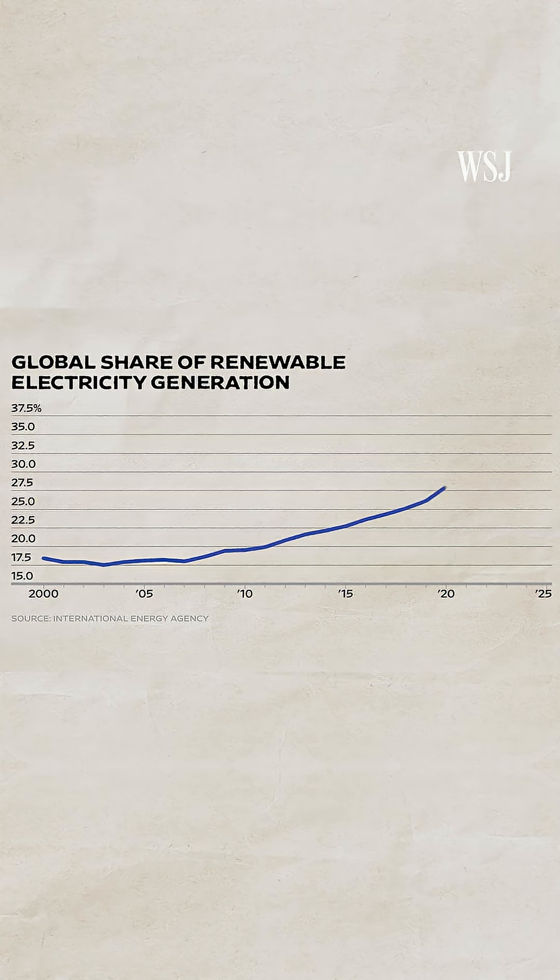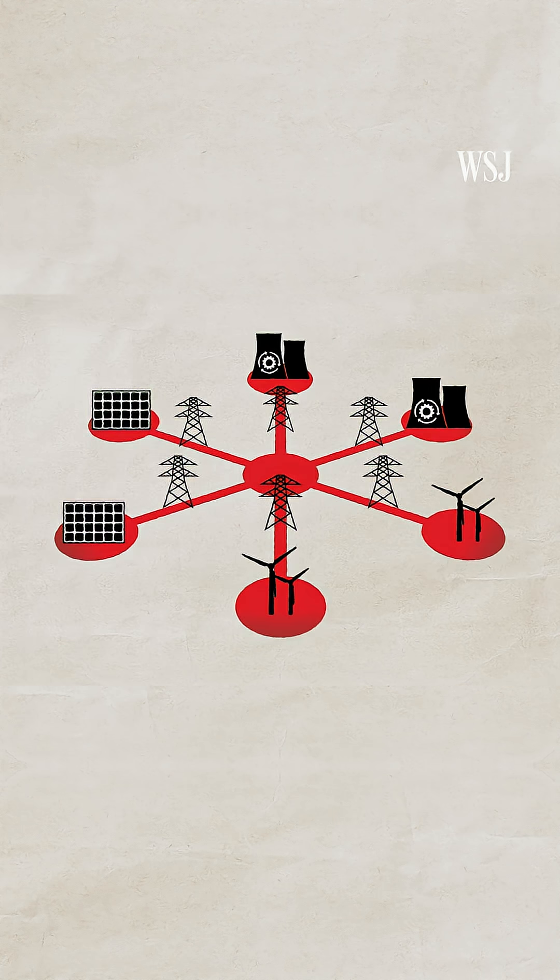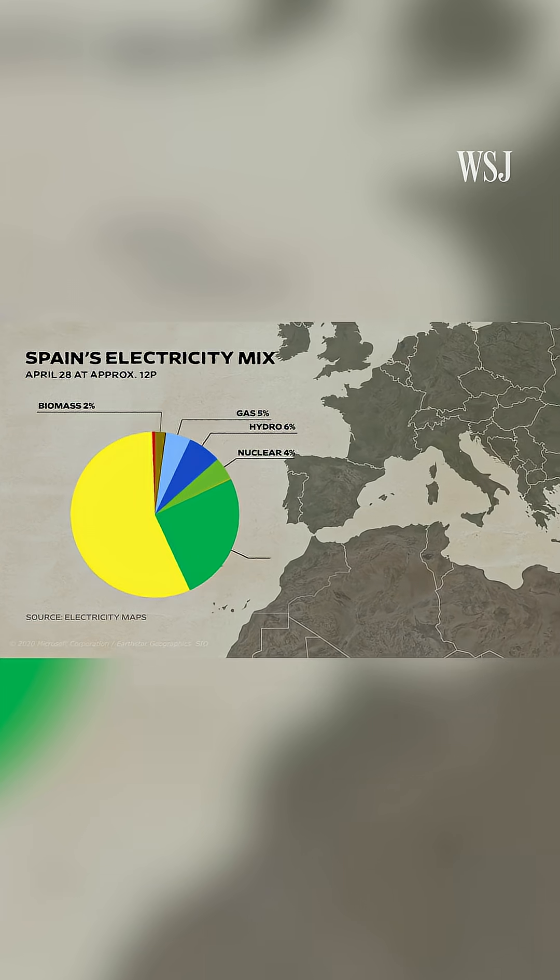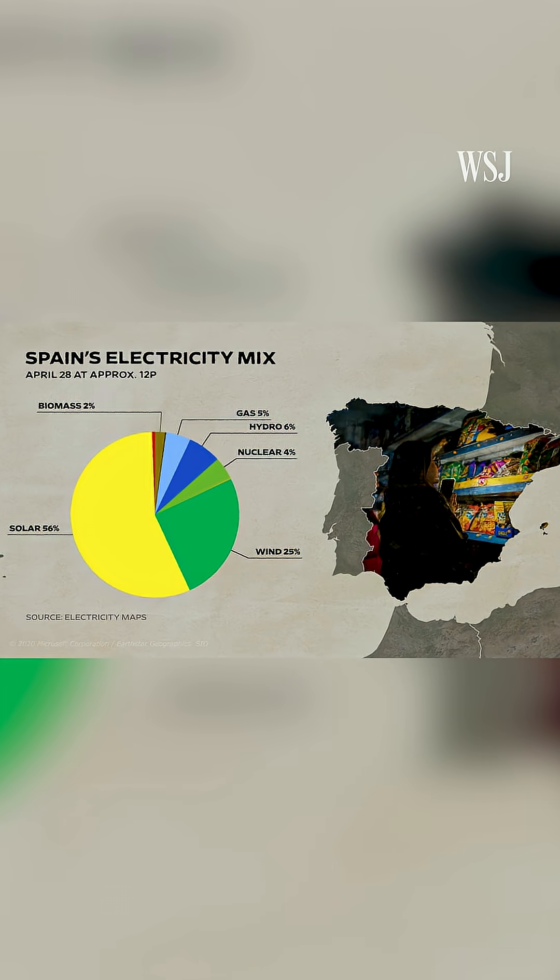Even though renewables have become a larger part of the overall power supply, grid infrastructure hasn't kept up. It's why some grid experts say renewables contributed to the severity of the blackout across Spain and Portugal in April.